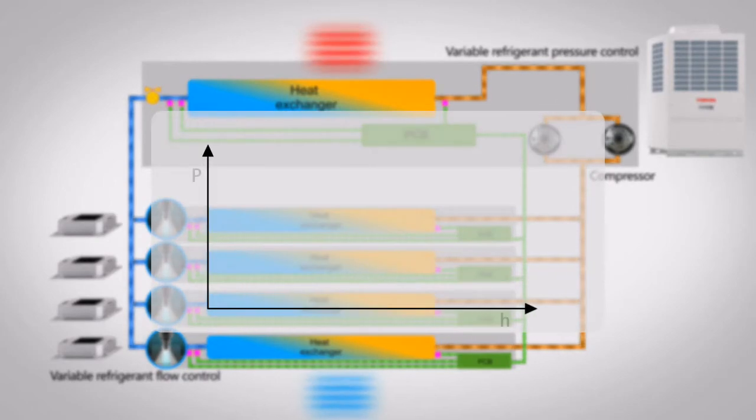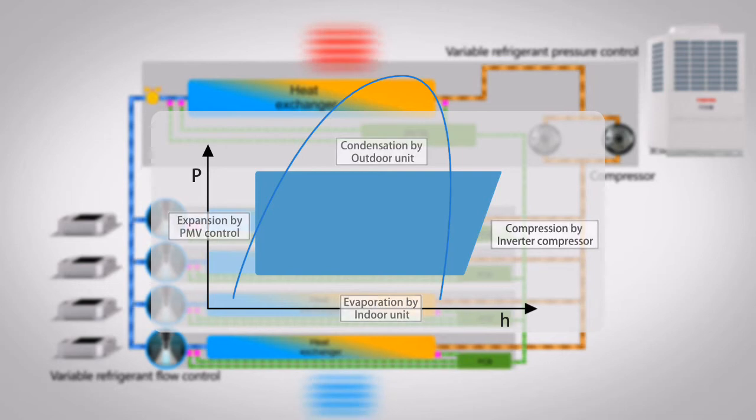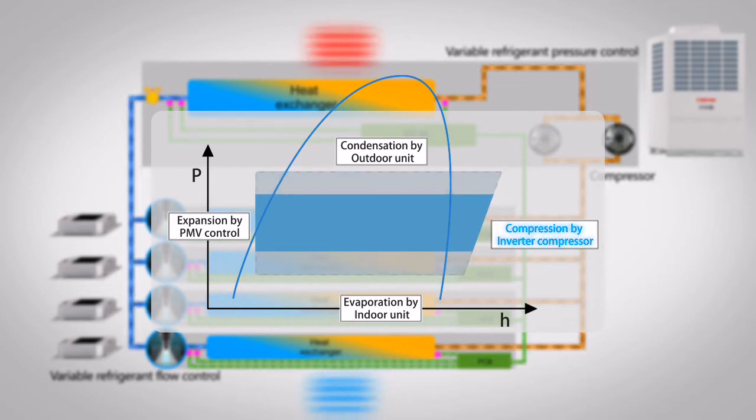The outdoor unit controls refrigerant pressure through variable compression and refrigerant flow division, whilst refrigerant flow volume control can smoothly respond to the fluctuating capacity demands of the indoor unit. The appropriate adjustment of the refrigerant pressure and flow volume allows the system to minimize waste factors and energy losses.